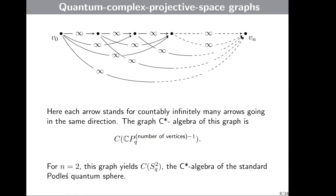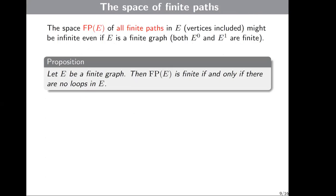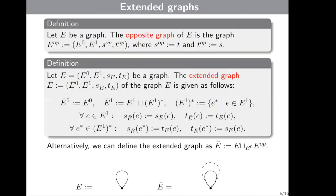That would be all regarding the introduction. So let's go back to combinatorics and counting paths. The space FP(E) of all finite paths in E, vertices included, might be infinite even if E is a finite graph — even if both E_0 and E_1 are finite. The easiest example is the graph with only one vertex and one loop: then the space FP(E) contains the vertex, then path e, then e followed by e, and so on.